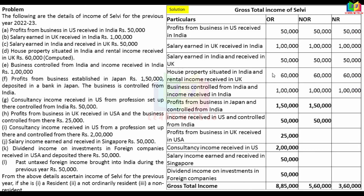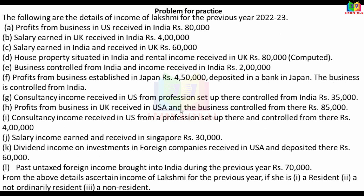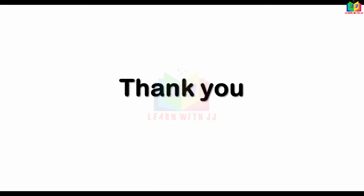Final answers for Selvi: ordinary resident gross total income = 8,85,000; not ordinary resident = 5,60,000; non-resident = 3,60,000. You will have to practice these two models, work out the answers and post in the comments — I will check your answers. Thank you for your patience in listening.